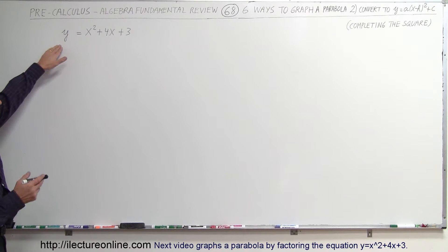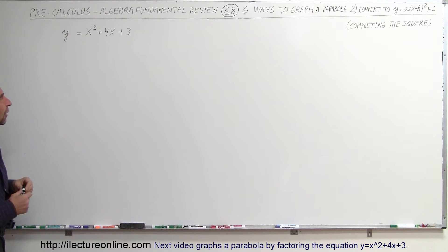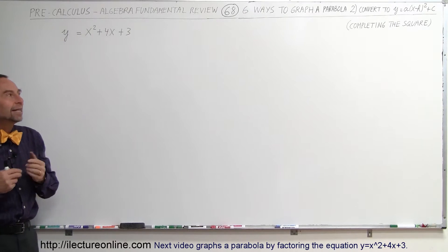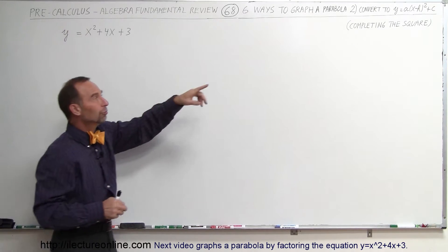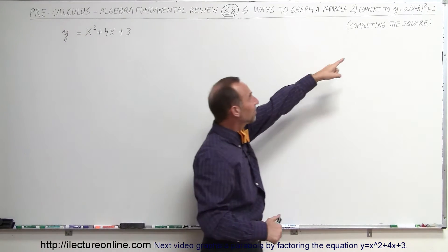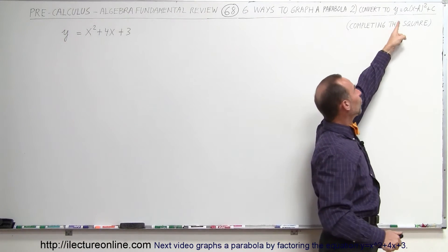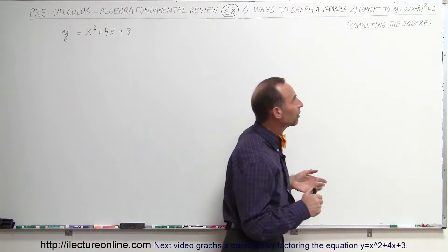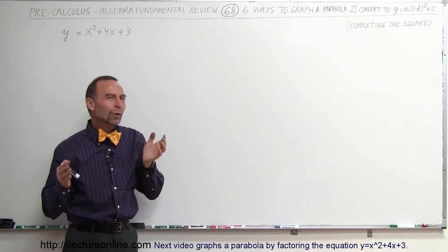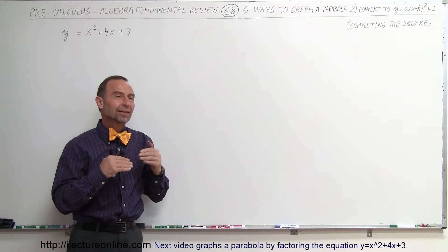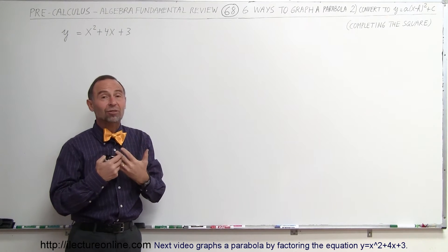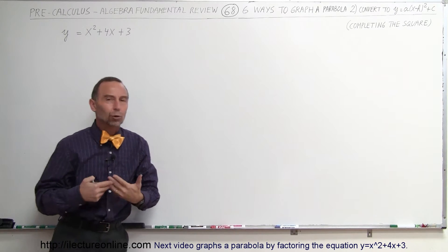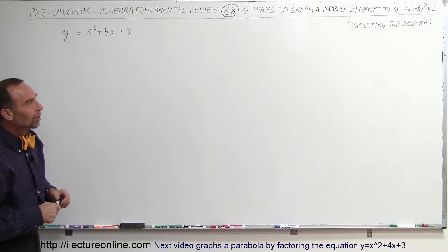Starting again with the same equation — y equals x squared plus 4x plus 3 — we're going to use the technique where we convert it to the general form that makes it easier to graph: y equals a times the quantity x minus h, squared, plus a constant. Another way of looking at this technique is it's very much like what we call completing the square.